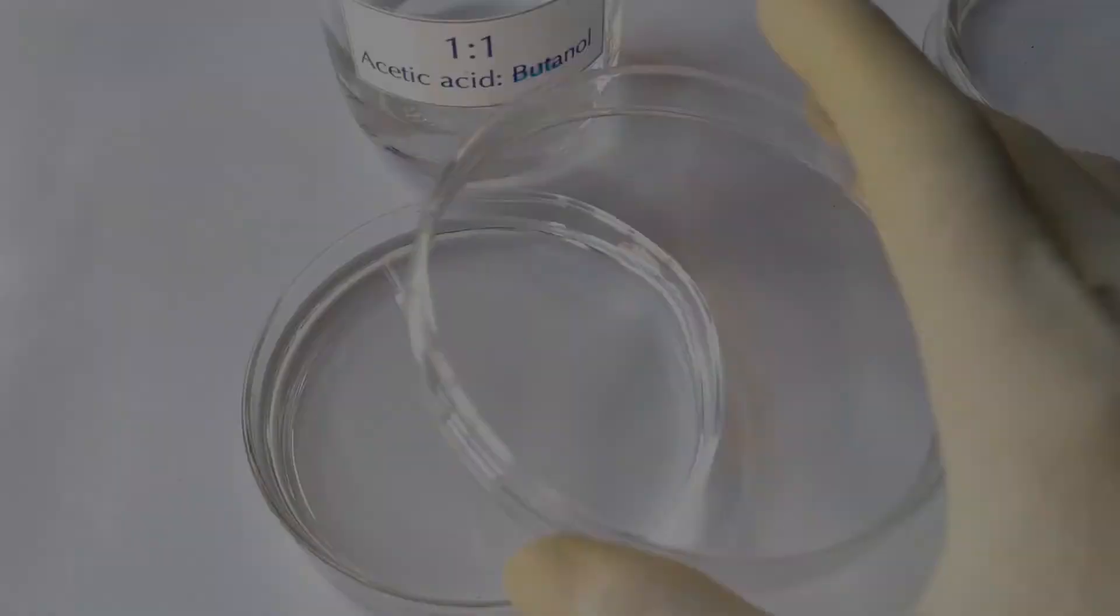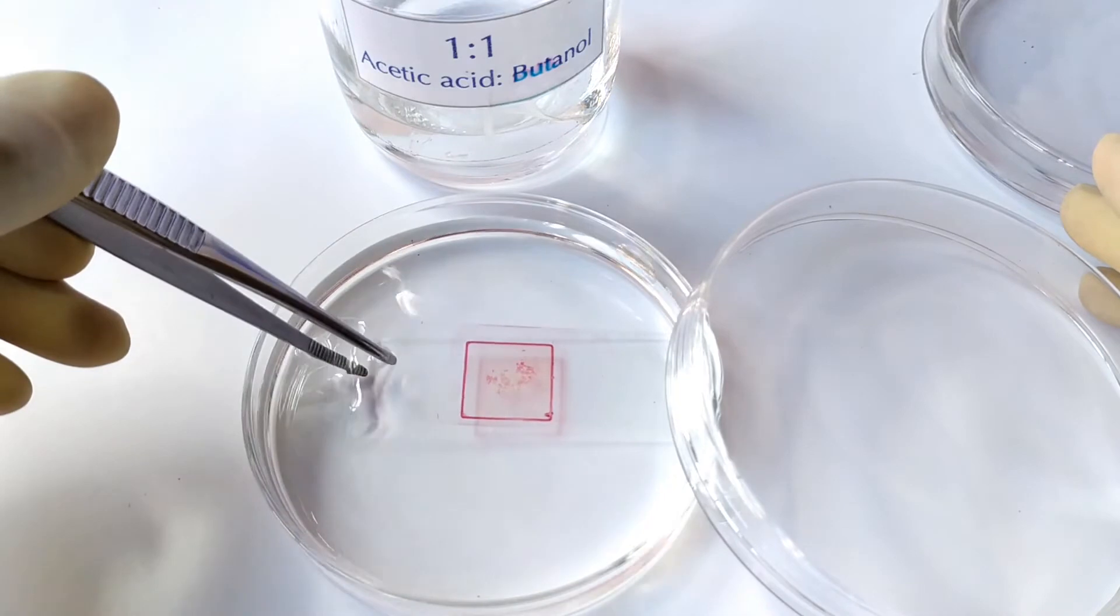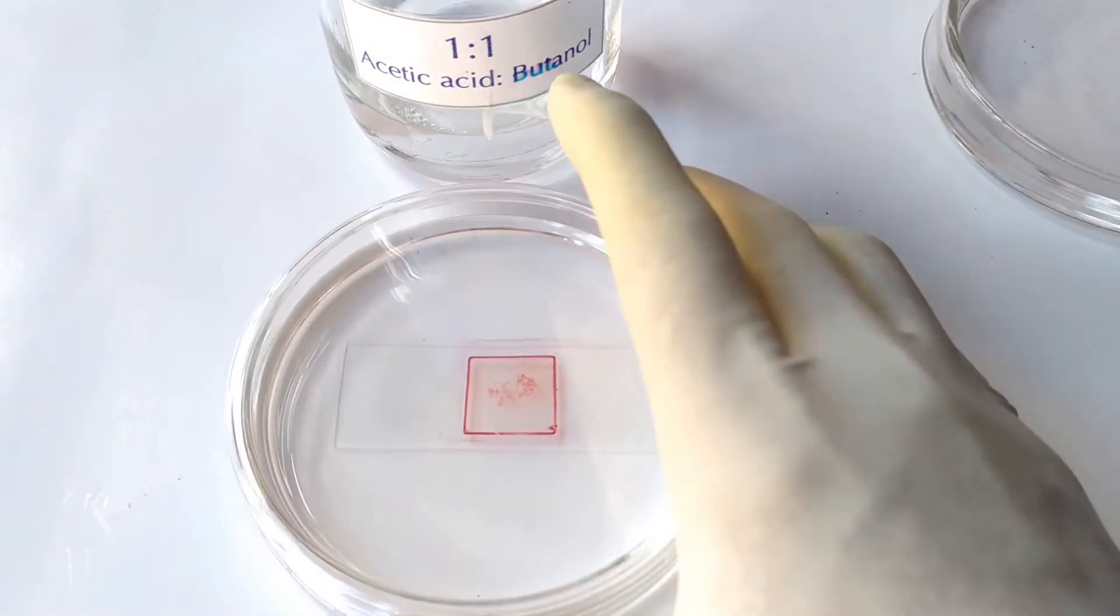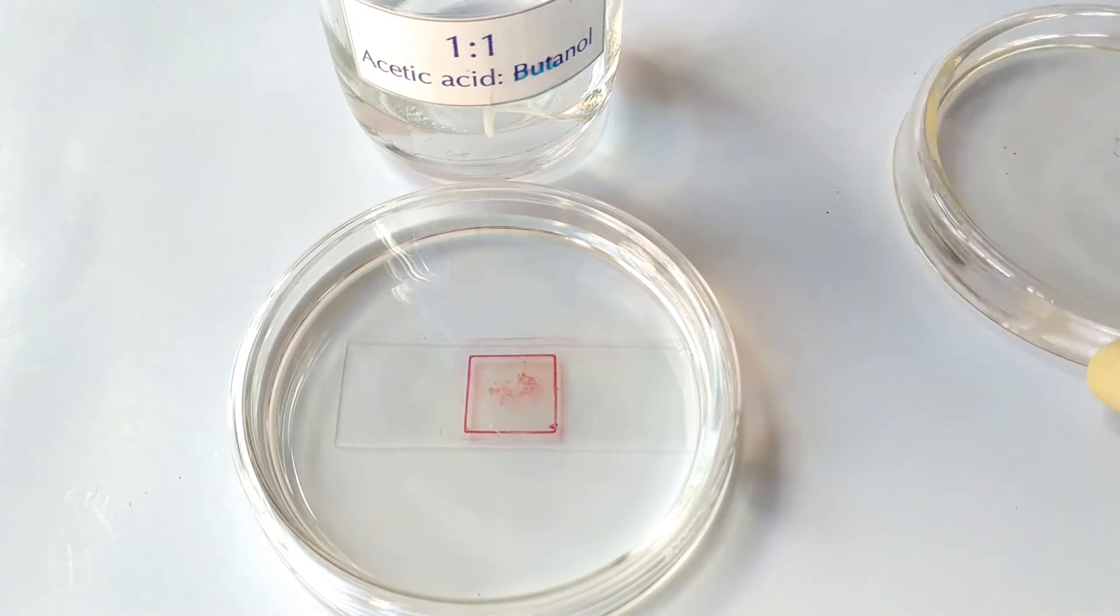To begin the process, take the temporary slide that we have prepared and immerse it into a coplin jar or a petri dish containing equal parts of butanol and acetic acid. Cover the jar or dish and leave the slide for about 10 minutes.